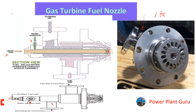The next thing is the gas port, which is the largest port in this drawing. In this cross-section, gas is flowing at the outermost periphery and is distributed in the outer circle of the fuel nozzle.